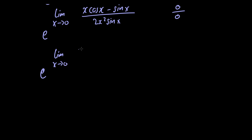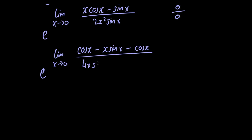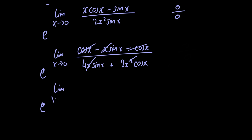So we're going to have to apply L'Hôpital's rule for the second time in order to progress with this problem. Taking the derivative of the numerator — we just have a product here so we need to use the product rule — we have cosine of x minus x times sin of x minus cosine of x, divided by the denominator, and we need to use the product rule again. So we have 4x times sin of x plus 2x squared times cosine of x.